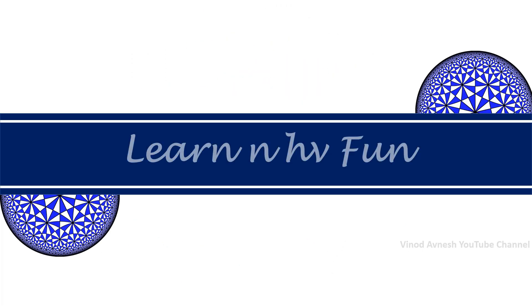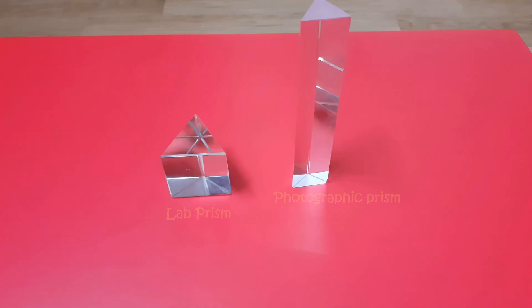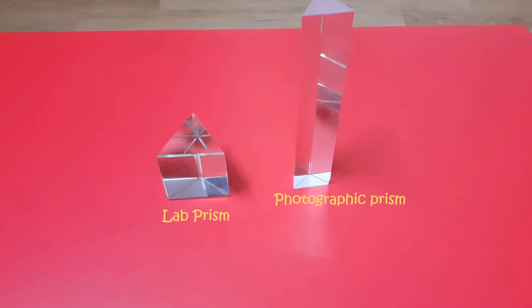Hello friends, welcome to our channel Learn and Have Fun. In this video we will learn about reflection of light through a glass prism and angle of deviation. In our activities we will be using two types of prism: a normal lab prism and a photographic prism.